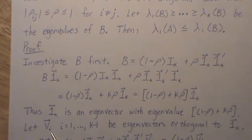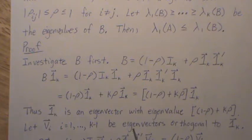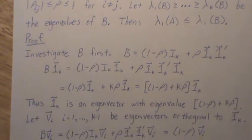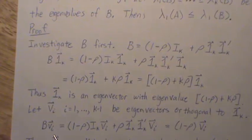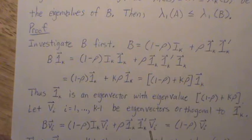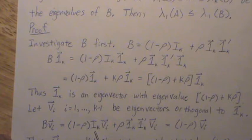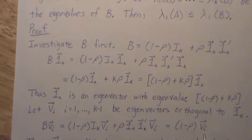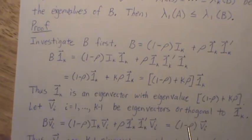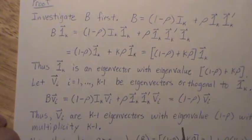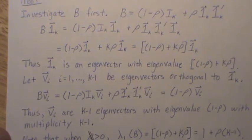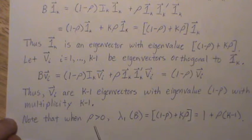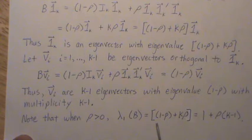Now let v_i, where i goes from 1 to k-1, be the other k-1 eigenvectors orthogonal to the column of 1s. When we multiply B times any one of these vectors, the ρ term drops out since they're orthogonal to 1, and we're left with (1-ρ)v_i. So every one of those v's orthogonal to the 1 vector is an eigenvector with eigenvalue 1-ρ. Thus the v_i are k-1 vectors with eigenvalue 1-ρ with multiplicity k-1. Note that when ρ is positive, the largest eigenvalue of B is [1 + ρ(k-1)].